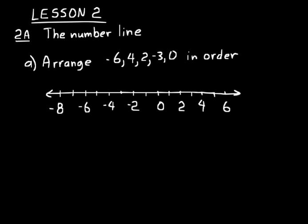Let's start marking some of these on the number line. Start with negative six — put a dot there to represent it. Then find four on the number line, over here on the right — put a dot there. Then two — put a dot to represent two. Then negative three, back to the left between negative four and negative two. Then zero — put a dot there. Now we have those numbers in order: negative six, negative three, zero, two, four.